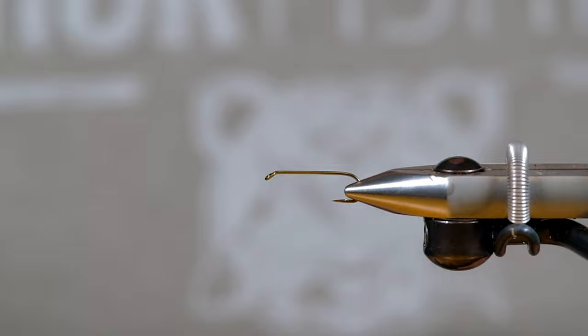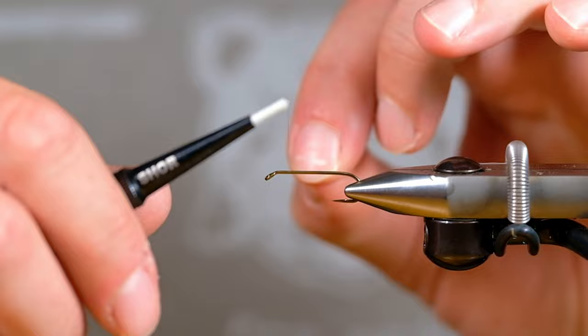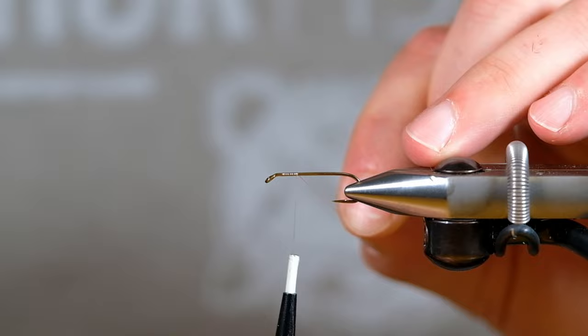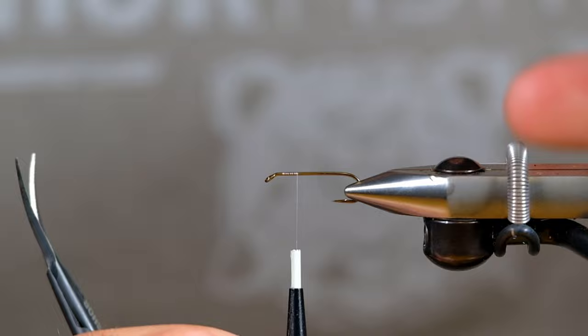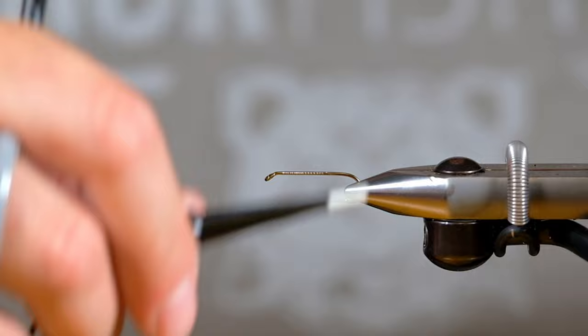All right, so we're gonna start our Come by Chance Green Machine off with a number 10 D4AF hook by Partridge. I really like these hooks for this pattern. This is one of those patterns that you've seen tied a million different ways, so I thought it was probably best that I tied it the way I like to fish them.